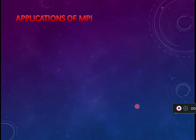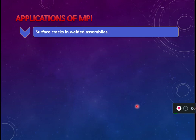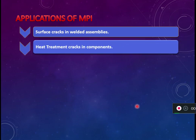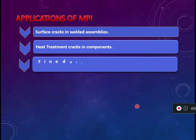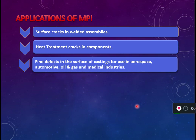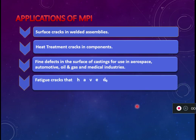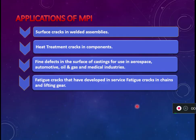MPI is generally used to find discontinuities such as cracks and pores in ferromagnetic materials. Applications include finding surface cracks in welded assemblies, heat treatment cracks in components, and defects in castings. It is used across aerospace, automotive, shipbuilding, oil and gas, and medical industries to detect surface and subsurface discontinuities such as cracks, seams, laps, and fatigue cracks that develop in service. Thank you.